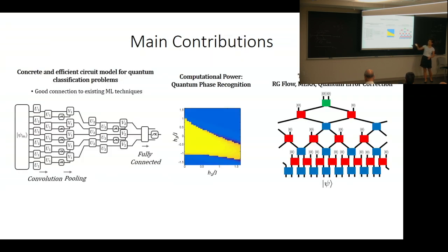Our main contributions are a concrete and efficient circuit model for quantum classification problems. We demonstrate the computational power to recognize different quantum phases of matter and provide theoretical explanation for why it works in terms of RG flow, entanglement, and quantum error correction.